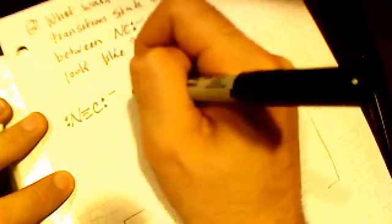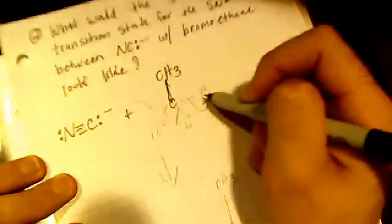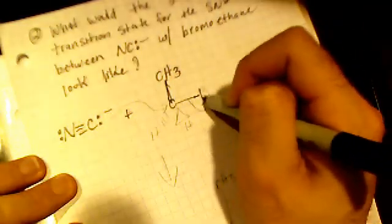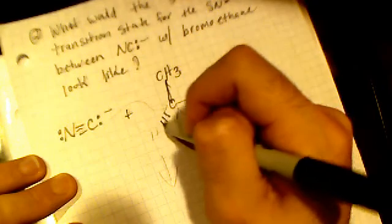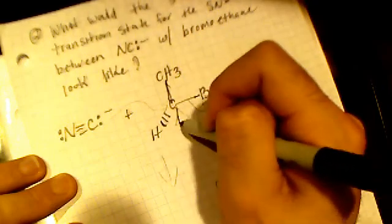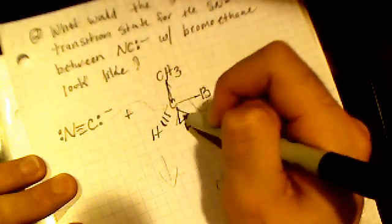So here we have the cyanide anion, and it's going to be attacking. This is SN2, so it's going to be nucleophilic attack on the bromine. It needs to attack from the opposite side of the bromine, so I'm going to put the bromine like this, and then I'm going to put the other hydrogens like this, so I have my 3D molecule as requested.